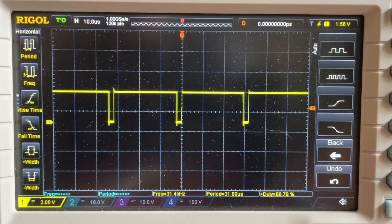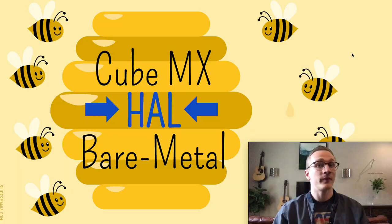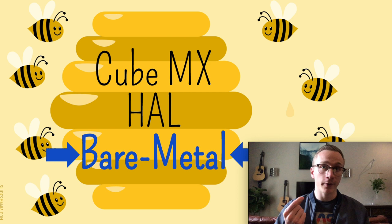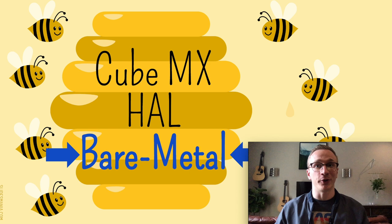Now we've figured out how to use HAL, but it's time to go one step further: bare metal. When I say bare metal, I mean we're going to be controlling the microcontroller by manipulating the registers directly. We're literally shoving numbers into certain places of memory, which causes the microcontroller to do things. If you're programming at this low of a level, it often means you need to do a lot of reading, and your code probably isn't going to make sense to anyone else unless they've also done a lot of reading.